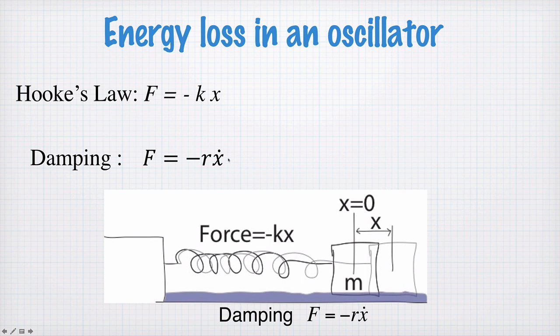So the faster the mass is going, the higher the damping force will be, and the damping force is always in the opposite direction to the motion of the mass. So it's in the opposite direction to the velocity. So whichever way you're going, the damping force is pushing against you.